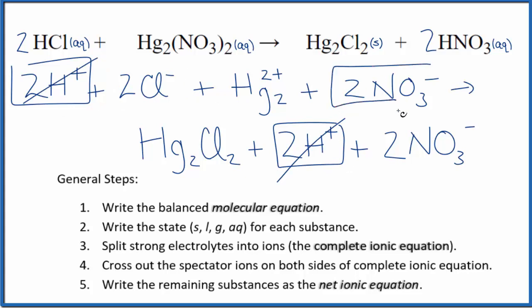Two nitrate ions, and then again in the products, two nitrate ions. Spectator ions, we cross them out.